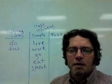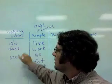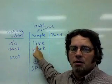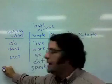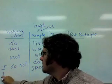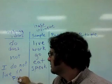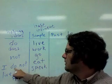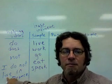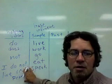To make the negative in the present tense, add 'not' to the helping verb and use the simple form of the verb. For example: I do not live in France. Here's the helping verb, the negative, and this is the simple form of the verb. The whole sentence is in the present tense.